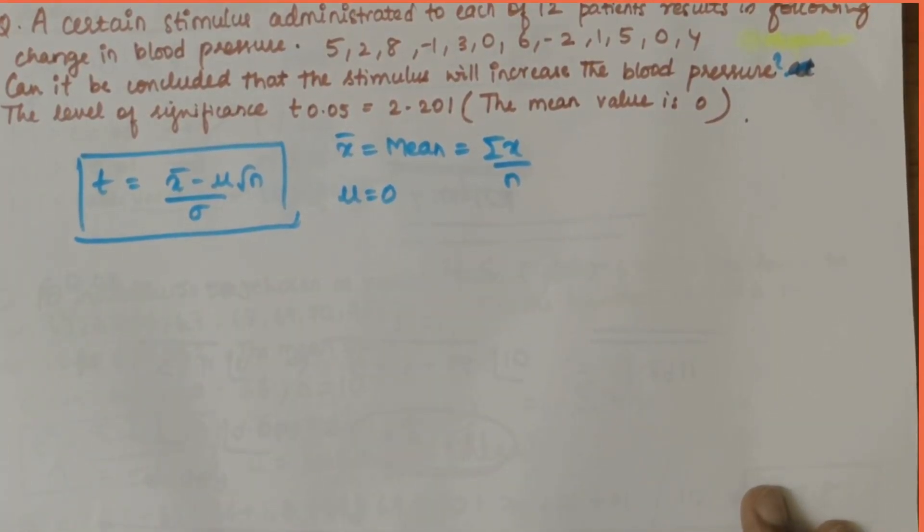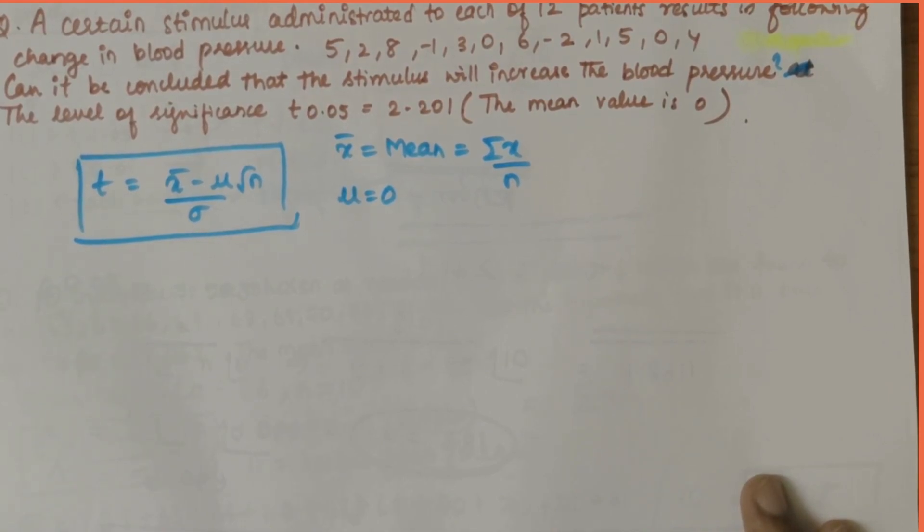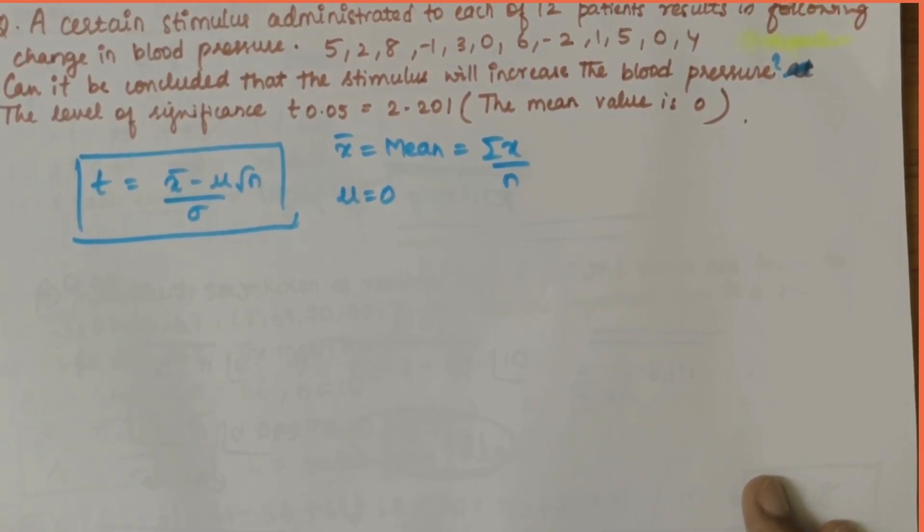In this video we'll be solving a numerical related to t-distribution. The problem statement says that a certain stimulus administered to each of 12 patients results in the following change in blood pressure, so the data is given. We have to check whether the stimulus will increase the blood pressure or not.